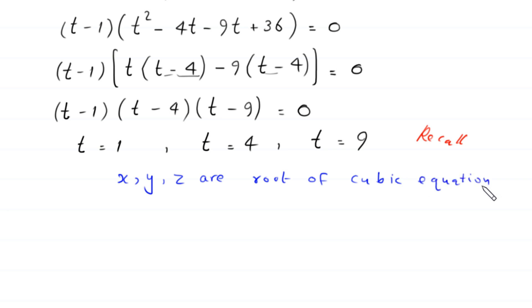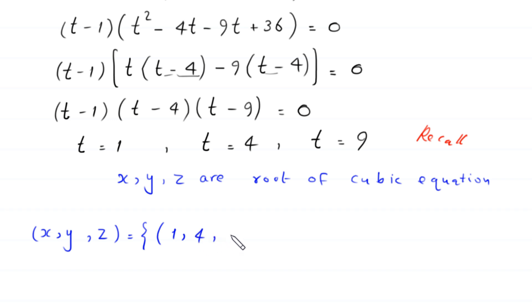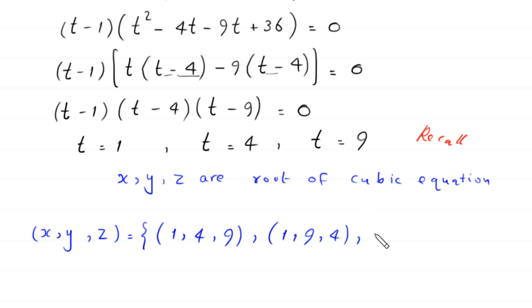So we get (x, y, z) = (1, 4, 9), or (1, 9, 4), or any permutation of these three numbers 1, 4, and 9. This is the final answer for this problem.